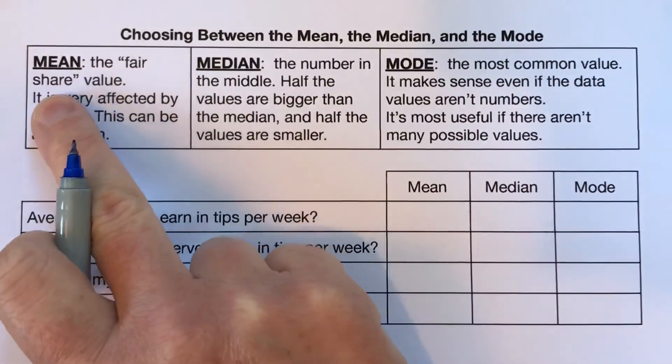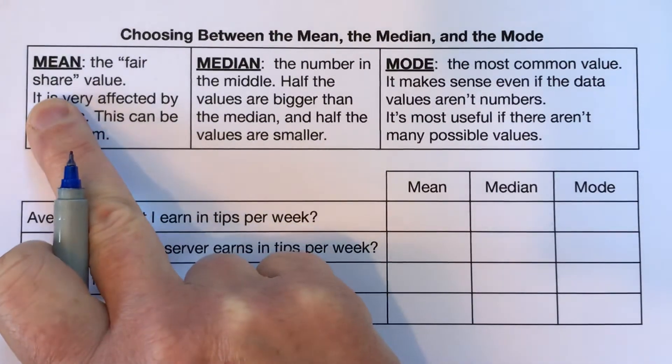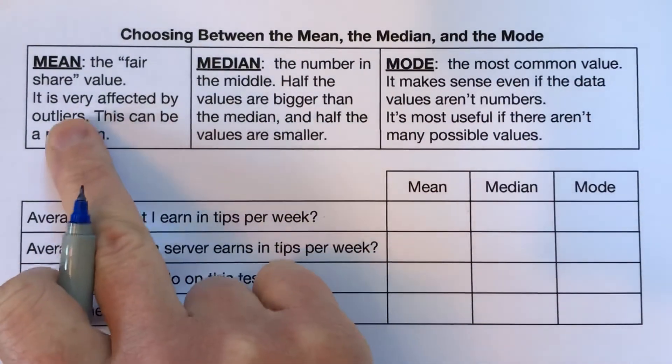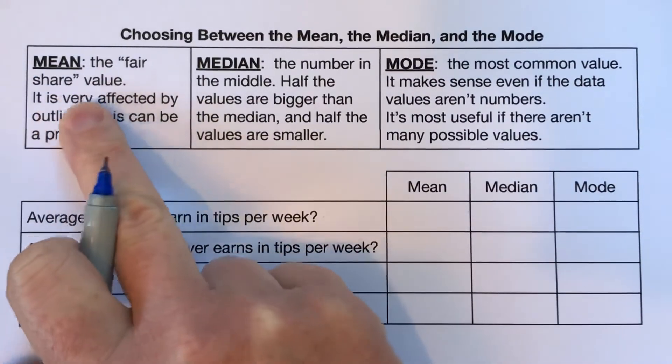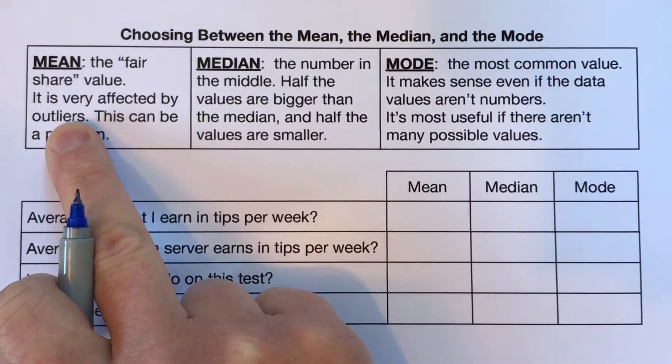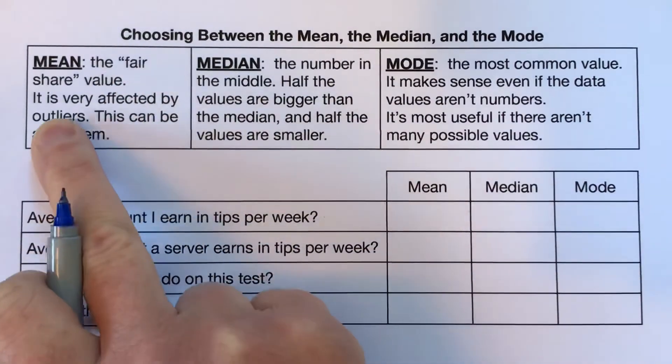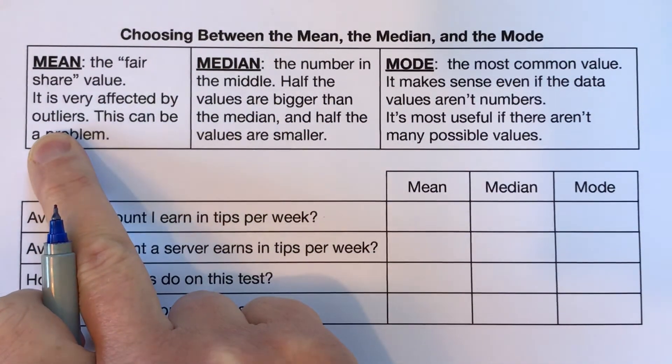So remember that the mean is the fair share value. For example, I made a little video with some people holding ice cream cones, I'll link to it in the corner up here if you haven't seen it. If the people were sharing their ice cream, the mean is really a good measure of sort of the average. If the people are not sharing, it's not as good of a measure of average. The other thing about the mean, which we also talked about in that video, is it can be really affected by outliers.